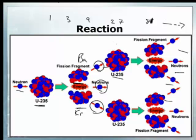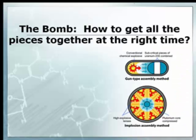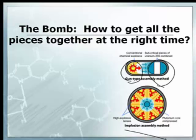It can happen extremely quickly. So if you want it to be supercritical, you can get it all going. When you build a nuclear bomb, all you have to do is get the right amount of mass of uranium-235 together, bombard it with some neutrons, and it blows up. There are actually two designs: the gun-type method and the implosion method.